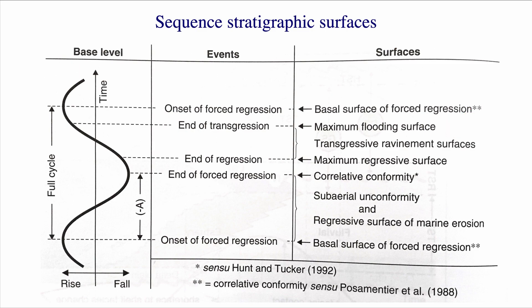Between the maximum flooding surface and the top of the next cycle, we have nothing really happening except normal regression. Then we have the next onset of forced regression that marks the next cycle. Don't be too worried if this seems complicated — there is a lot of terminology in sequence stratigraphy, and that's one of the barriers. But really, the principles are relatively simple, especially if you think back to that diagram showing the rates of sedimentation and the rates of base level change, because that is the fundamental engine that drives those sequence stratigraphic processes.